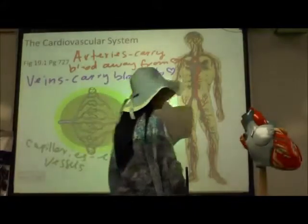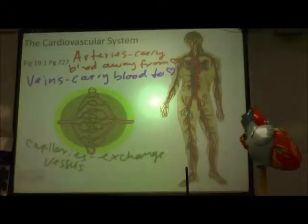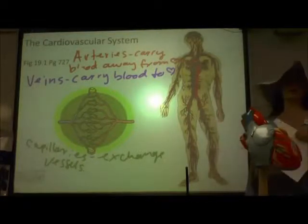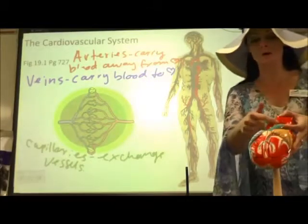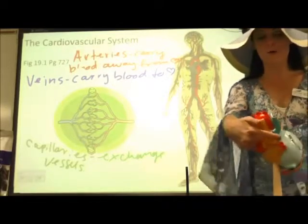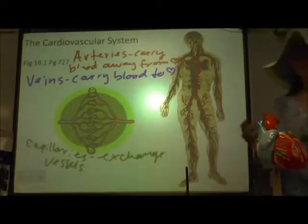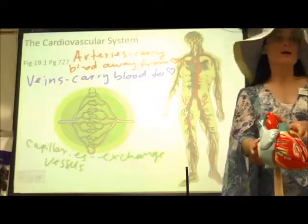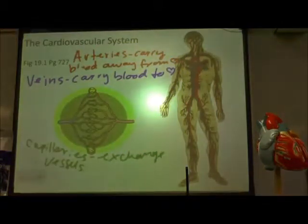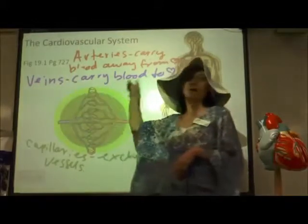We'll talk more about all of the types of vessels in the next chapter, but we need to at least understand what arteries and veins are today. A lot of people think that arteries carry oxygenated blood — most of the time they do, but not always, because we've got to get deoxygenated blood away from the heart to the lungs. The pulmonary trunk and left and right pulmonary arteries carry deoxygenated blood. Similarly, our pulmonary veins carry oxygenated blood back to the systemic circuit. So the best definition is that arteries carry blood away from the heart and veins carry blood to the heart.